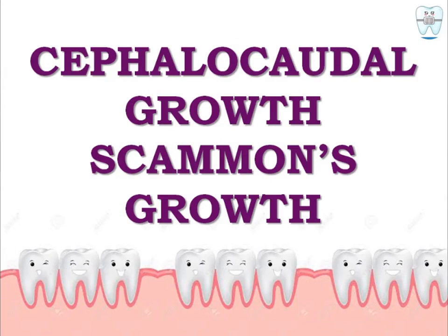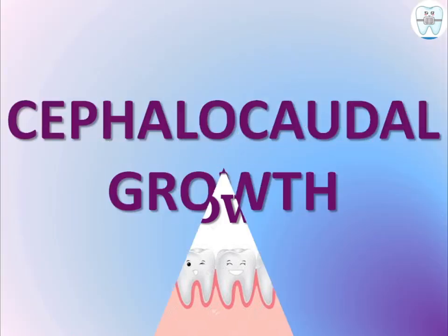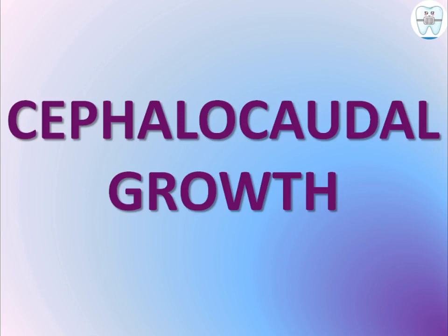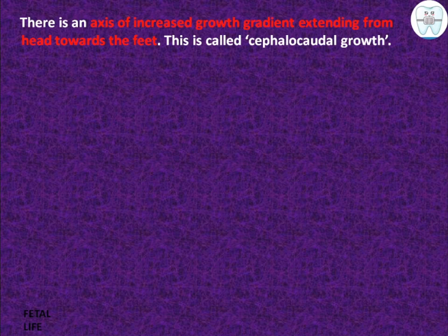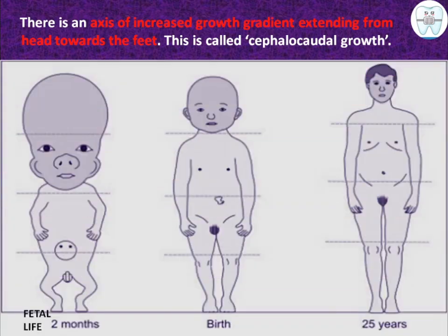Our topic for today is cephalocaudal growth and Scammon's growth. Cephalocaudal growth refers to an axis of increased growth gradient which extends from the head towards the feet.